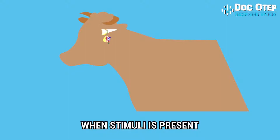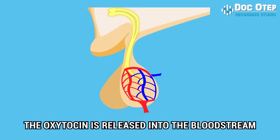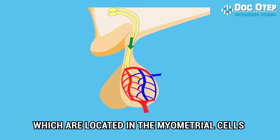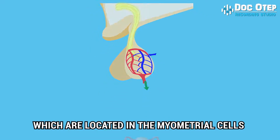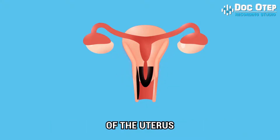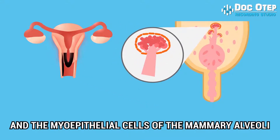When stimuli is present, oxytocin is released into the bloodstream and travels towards its receptors, which are located in the myometrial cells of the uterus and the myoepithelial cells of the mammary alveoli.